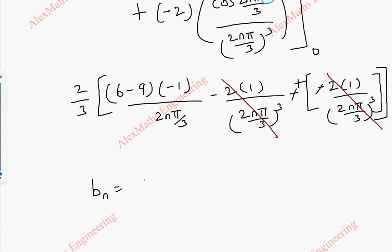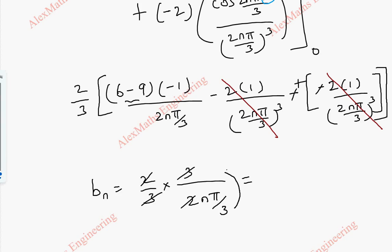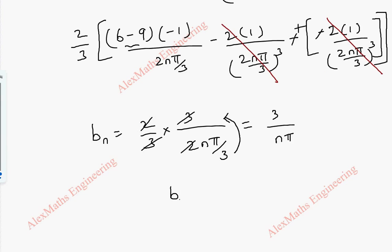And only the first term is remaining, which is 2 by 3. This becomes minus 3 divided by (2nπ/3). After cancelling, the 3 in the denominator is taken to the numerator, giving 3 by nπ. So we got bn equals 3 by nπ. We keep this separately.